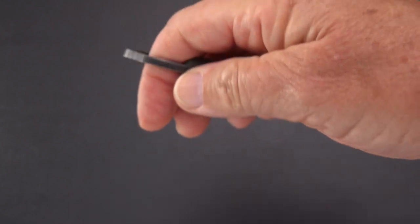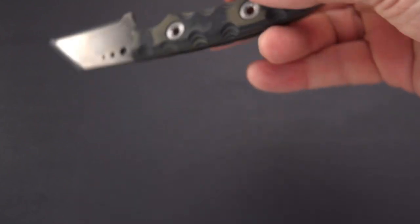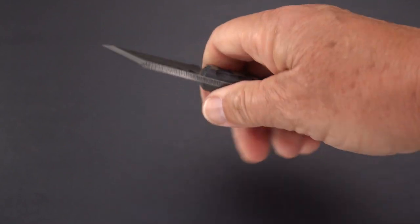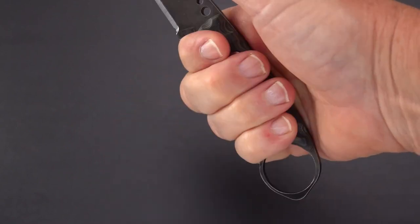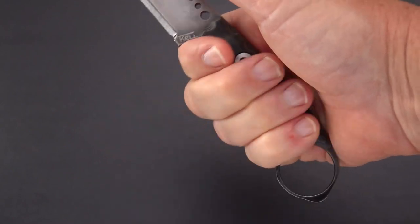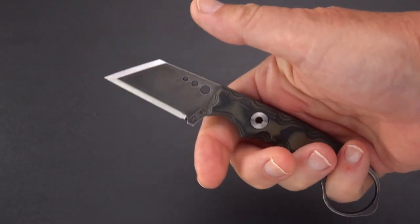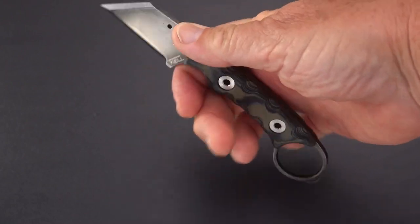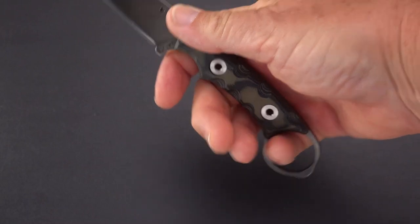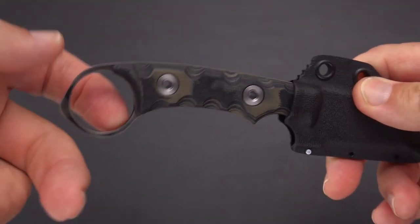Usually that's going to line up better the farther forward you can put this ring, but in a knife this short there's only so far forward you can throw that ring. We got a little nub on the end here which can act as a glass breaker or skull crusher for non-lethal impact use.